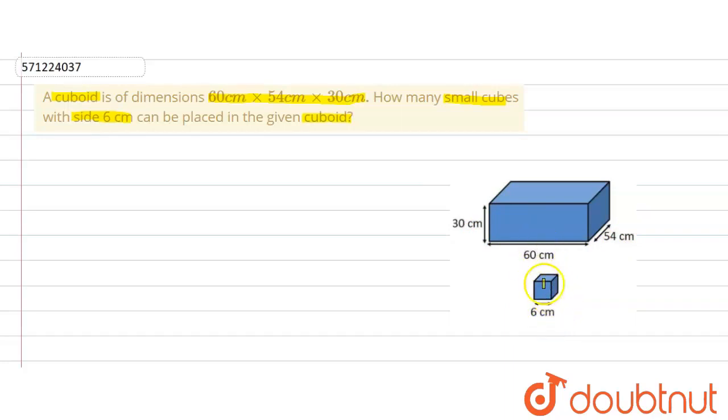Now we are supposed to find out how many cubes of this dimension can be placed inside this cuboid of given dimensions. So let's do it. First of all, we will find out the volume of the cuboid.